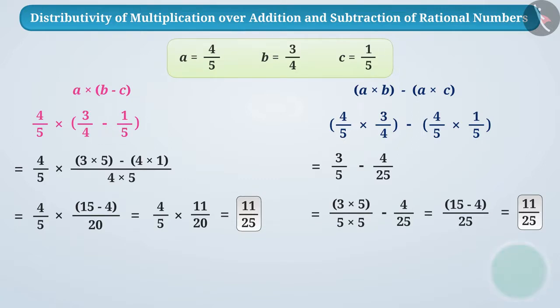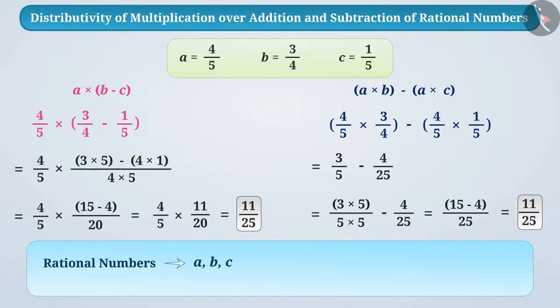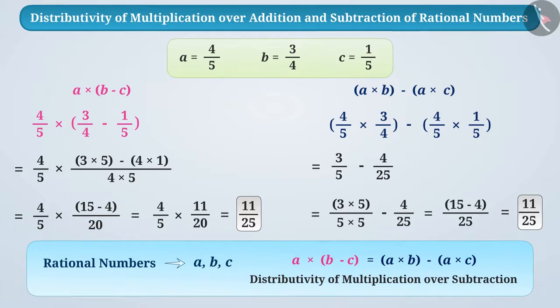Sure, we can say that for any three rational numbers a, b, c, a multiplied by b minus c is equal to a multiplied by b minus a multiplied by c. We call this distributivity of multiplication over subtraction.